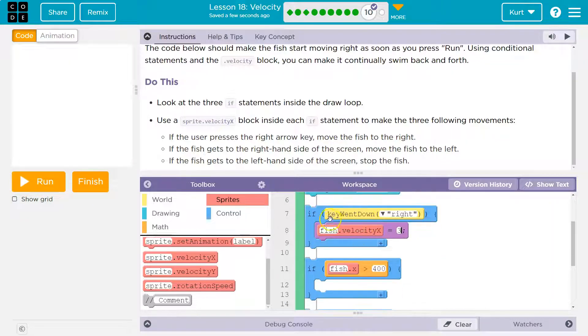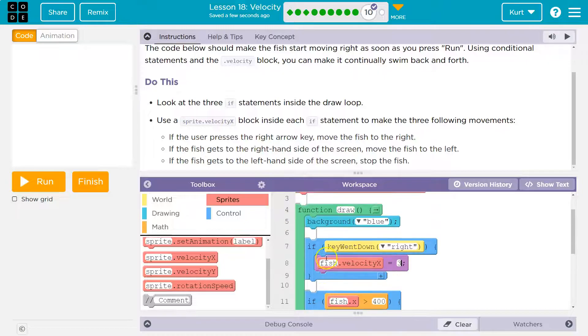So we want to now work on that. Okay, so what this is doing is if key down right, this is going to respond with a Boolean. If that is true, if the right key went down, then it will give our fish a velocity. And this is inside the draw loop. What this velocity block does is just like saying fish.x equals fish.x plus three. We're basically adding three to the x value.